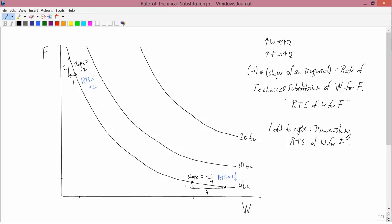And that is characteristic of convex indifference curves. Convex indifference curves are always going to have diminishing rate of technical substitution of whatever is on the horizontal axis for whatever is on the vertical axis.